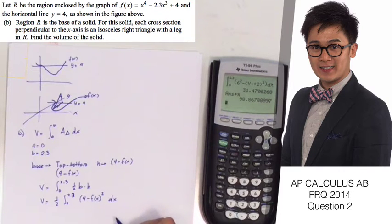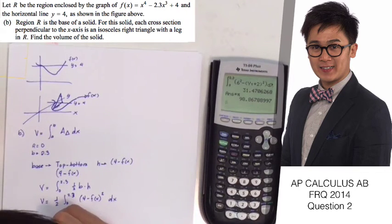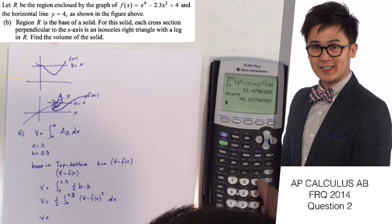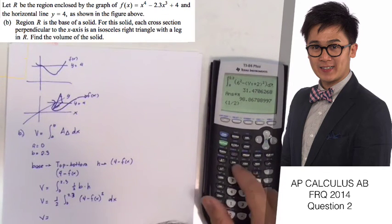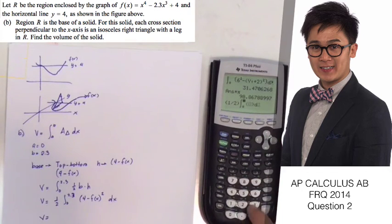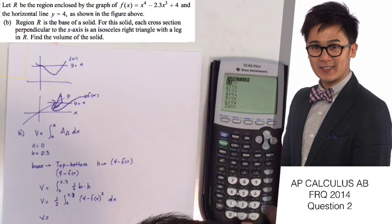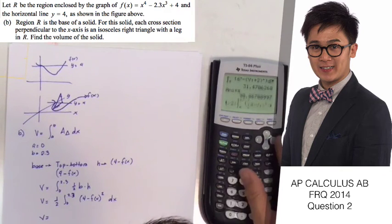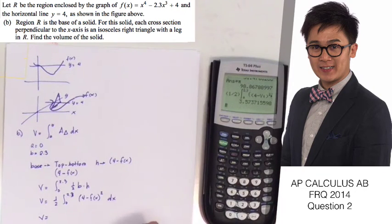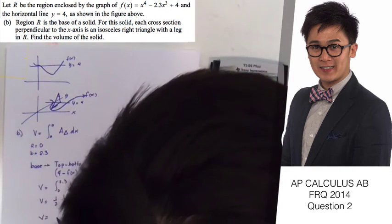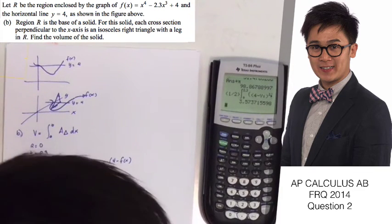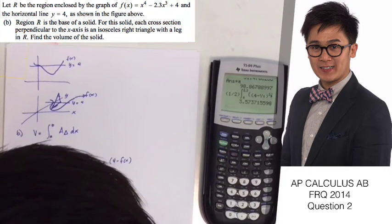Using our calculator with the integral set up, we compute (1/2) times the integral from 0 to 2.3 of (4 - y₁)² dx, which gives us 3.573. Rounding, the volume is approximately 3.574 units cubed.